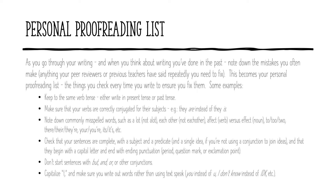Some of the common ones: keep to the same verb tense — write either in past tense or in present tense consistently. Make sure your verbs are correctly conjugated for their subjects — so it's not 'they is', it's 'they are'. Note down commonly misspelled words, such as 'a lot' which is two words not one, and 'each other' which is also two words. Use 'affect' and 'effect' correctly — 'affect' is generally a verb, as in 'it affects me', while 'effect' is generally a noun, as in 'the effect of this is'. Also watch the homophones: two/to/too, there/their/they're, your/you're, its/it's, etc. Check your sentences are complete — you have a subject and a predicate and it's a single idea unless you're using a conjunction or semicolon to join ideas.